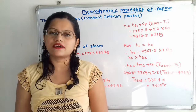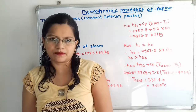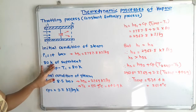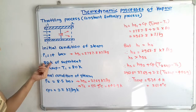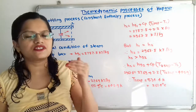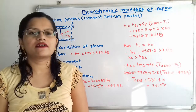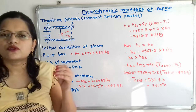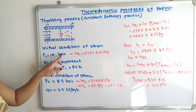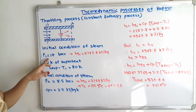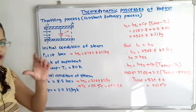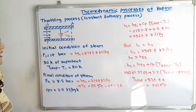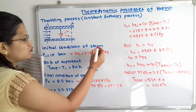Let us understand the initial and final conditions of steam with the help of the steam table. For initial condition, pressure P1 is 14 bar and 80 K of superheat is given. That means the value of superheating over the dry and saturated temperature is 80 Kelvin — T1 superheated minus T1 equals 80 K. T1 is the dry and saturated temperature for the pressure of 14 bar. The initial condition of steam is superheated steam.